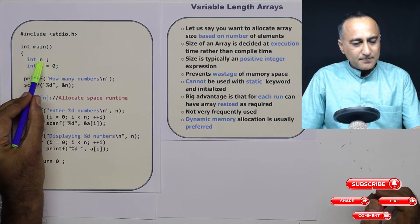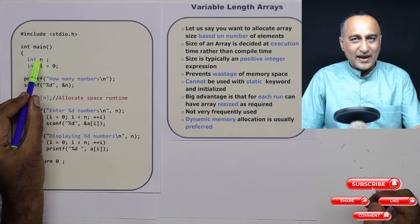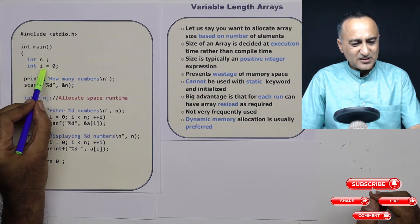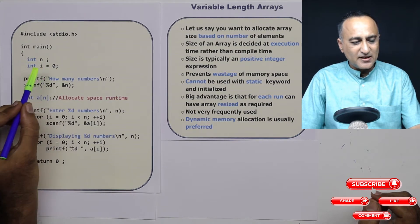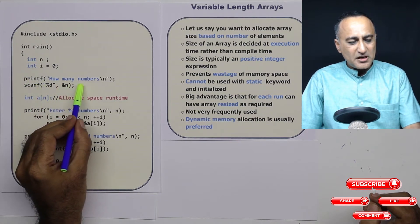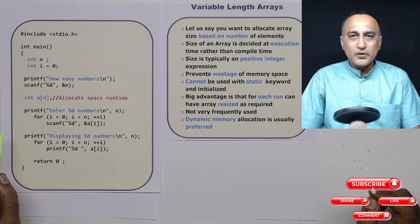So this variable n will hold the size of the array at runtime. This is the index used to travel through a single dimensional array. I'm first asking the user: how many numbers do you want to enter?